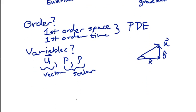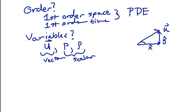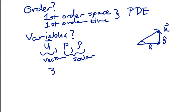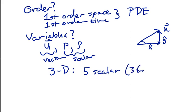With our three variables — one of which is a vector and two of which are scalars — this is five scalar variables in 3D. That's three from u because u is a vector with three components, and then one from p and one from rho. Or we could think of it as one vector and two scalars.